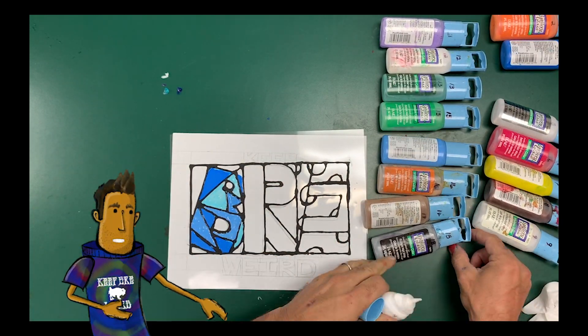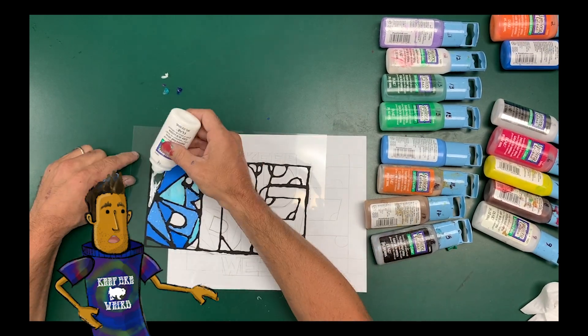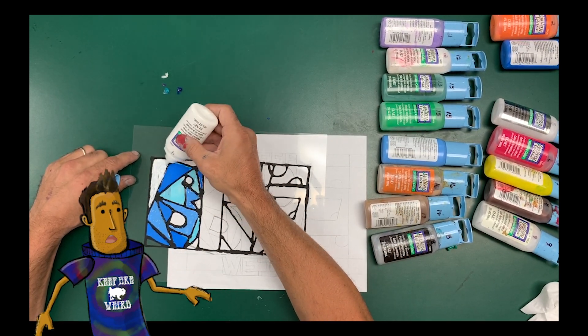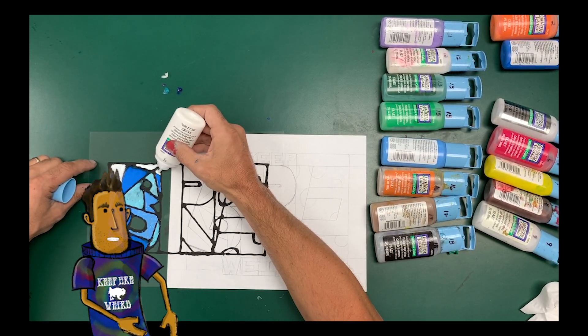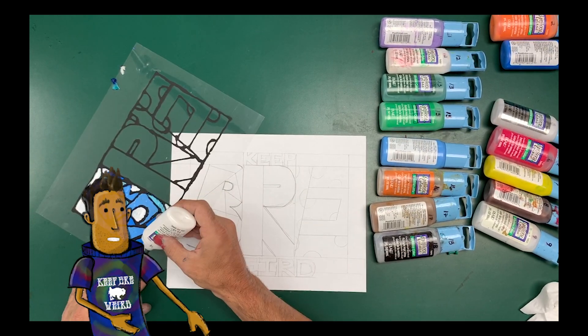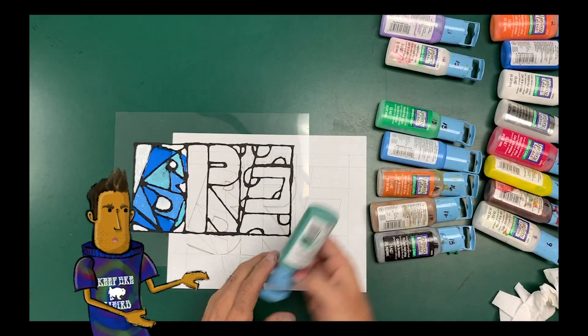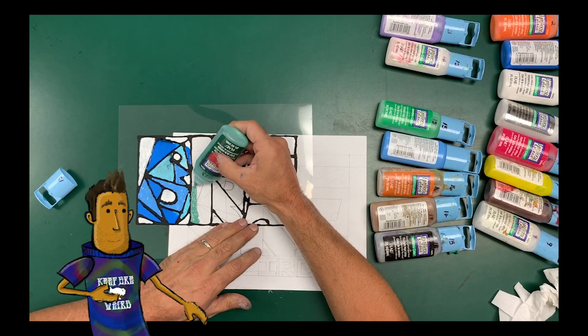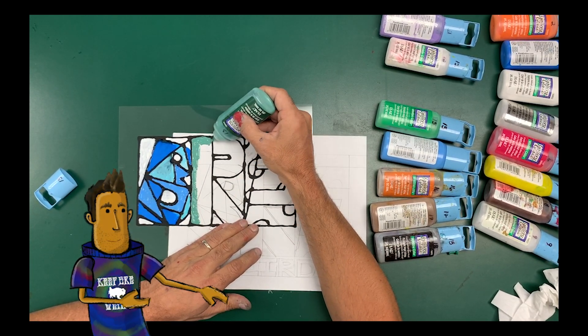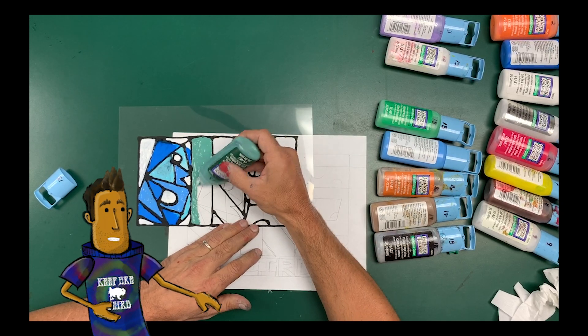And you don't want to squeeze too much, or too much comes out. And you don't want to squeeze it too little, or not enough comes out. And then you just kind of spread it out with the tip of the actual paint itself. You spread it and kind of move it around.